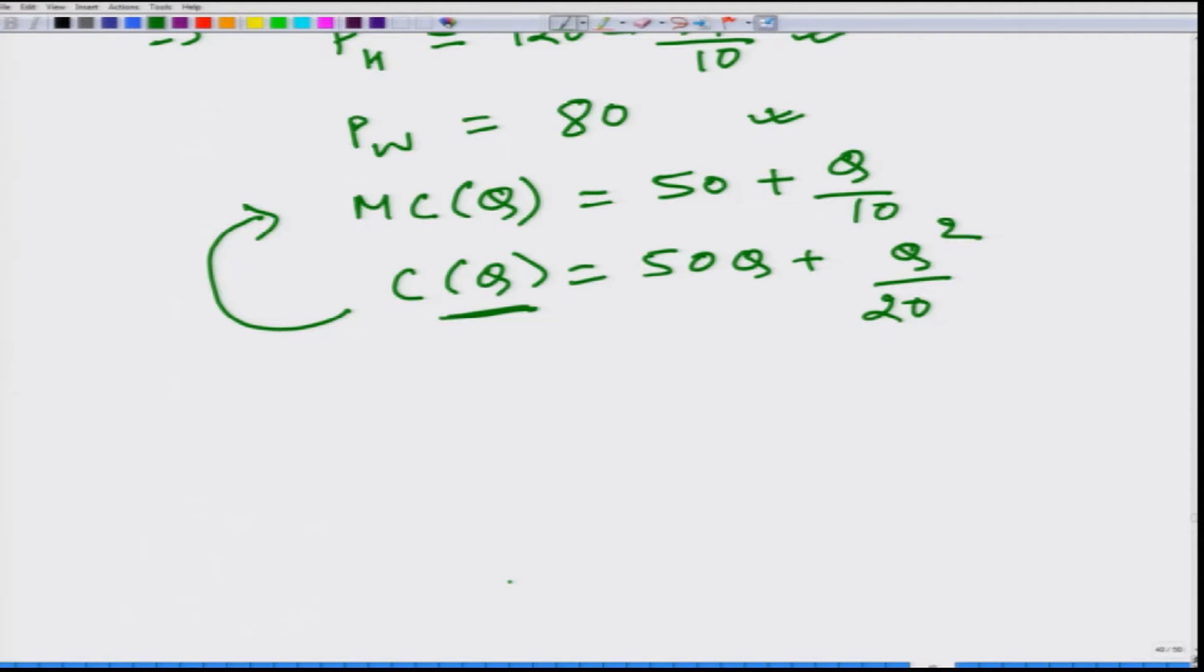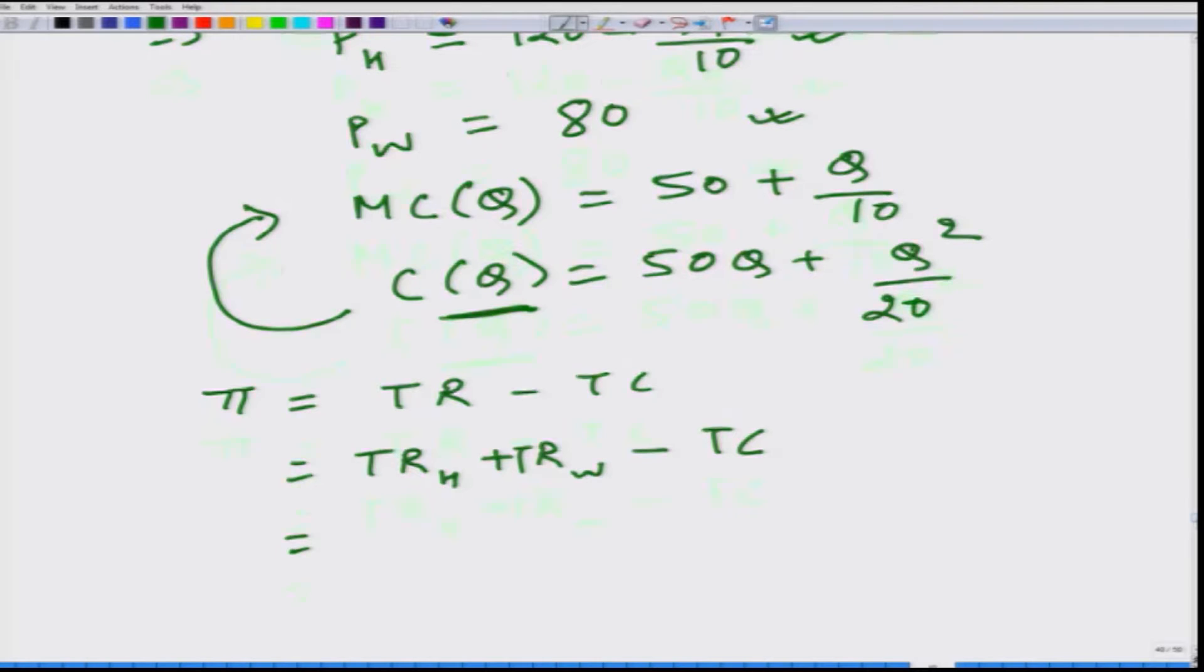Now what we need to do is to do the profit maximization for this firm. What would be the profit maximization? First it is going to equal to total revenue minus total cost, but total revenue is coming from two different markets. One is in the home market and another from the world market, but total cost, the production takes place in the same factory. How much is the total revenue at home? The units that it would be able to sell would depend on what is the price of its product in the market. It is going to be PH multiplied by QH.